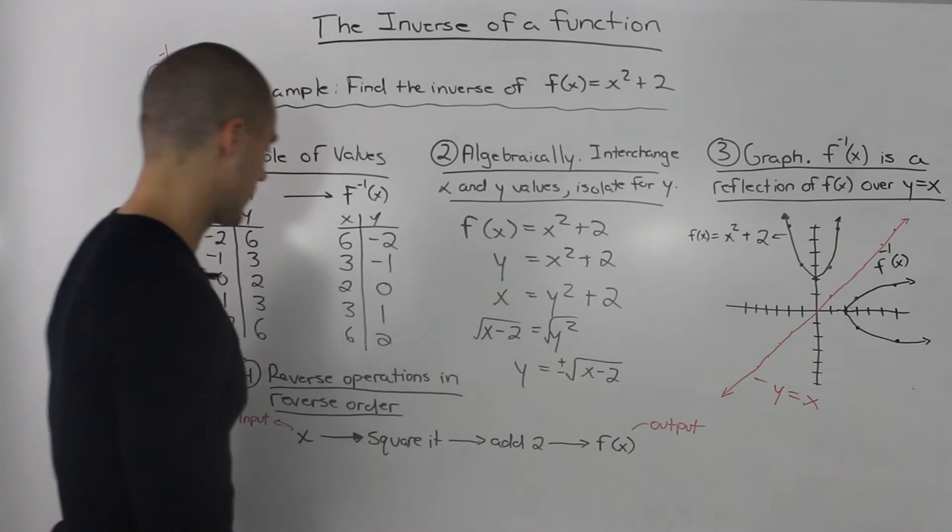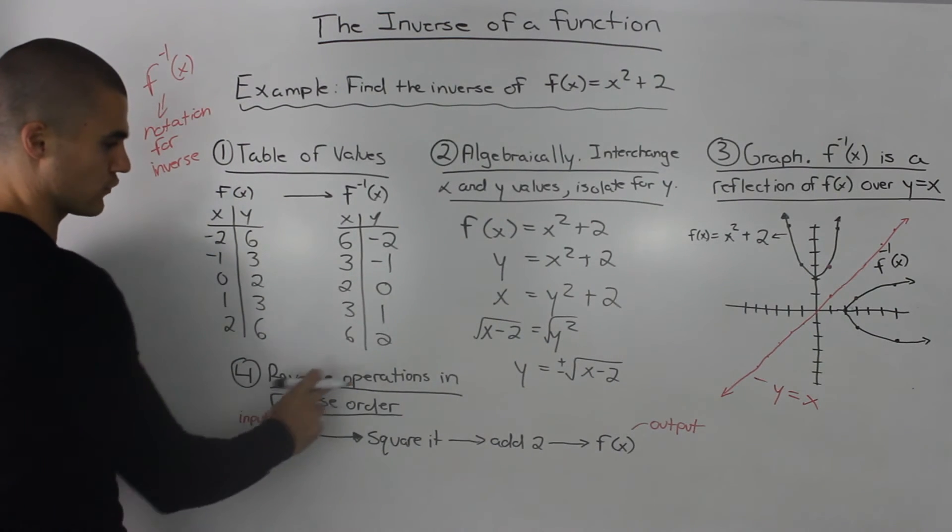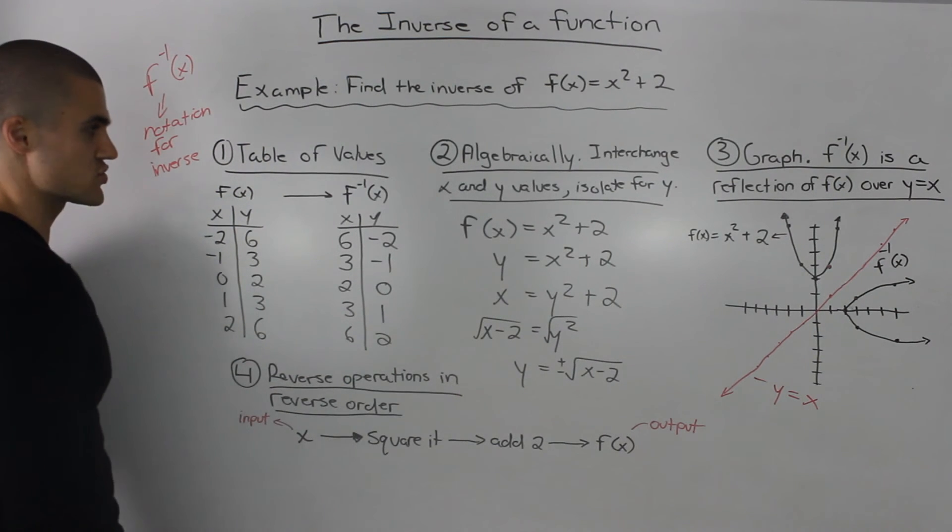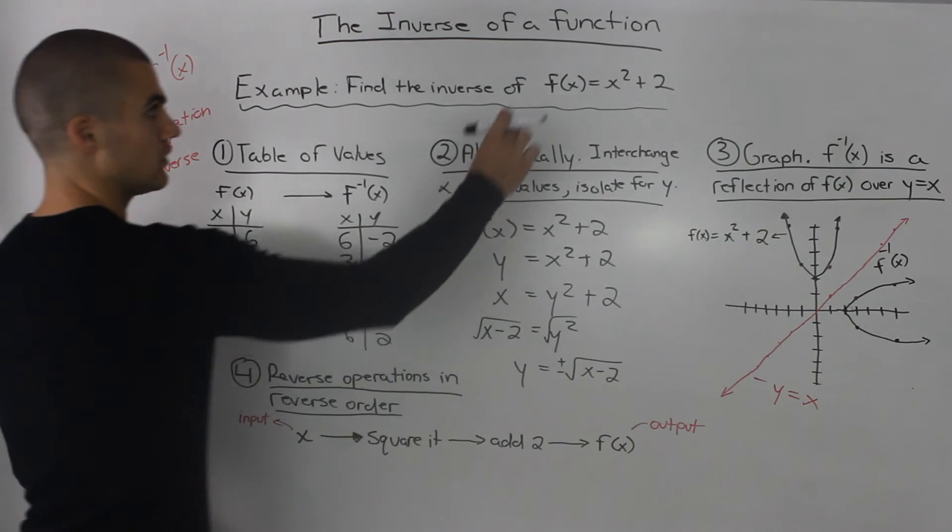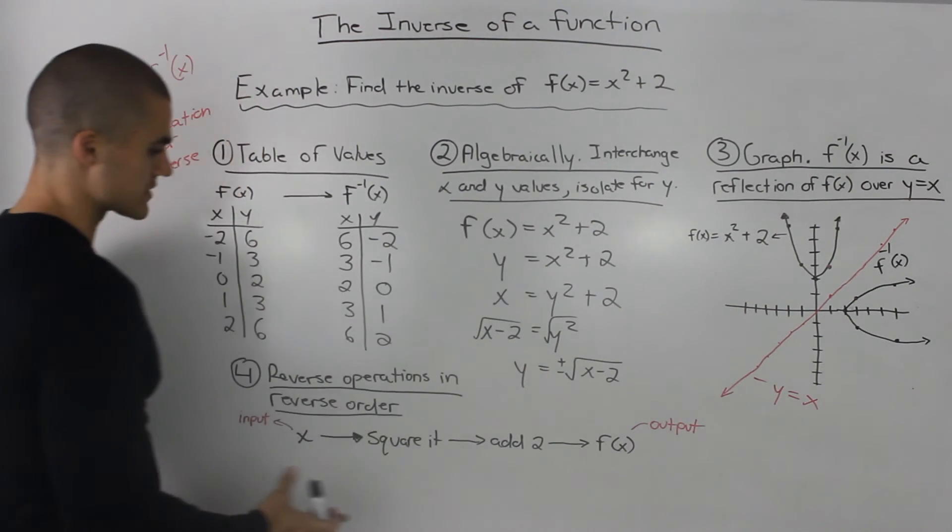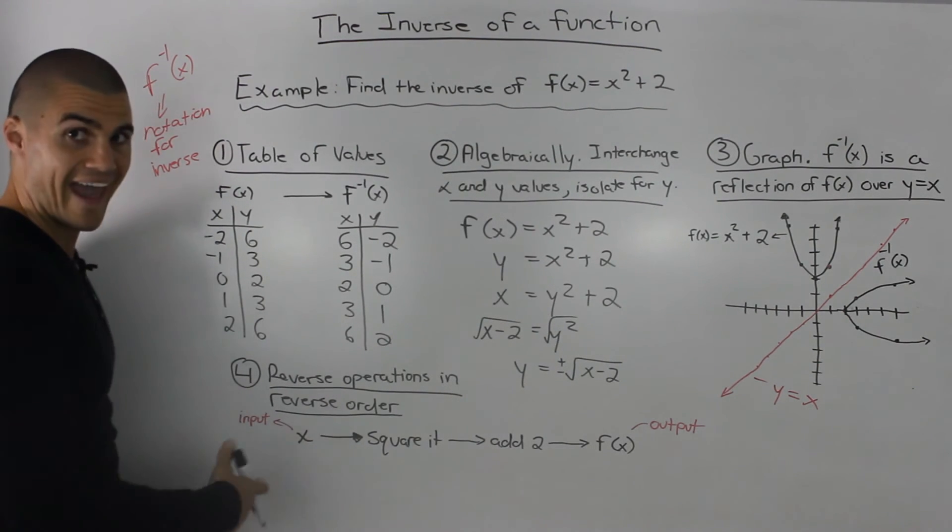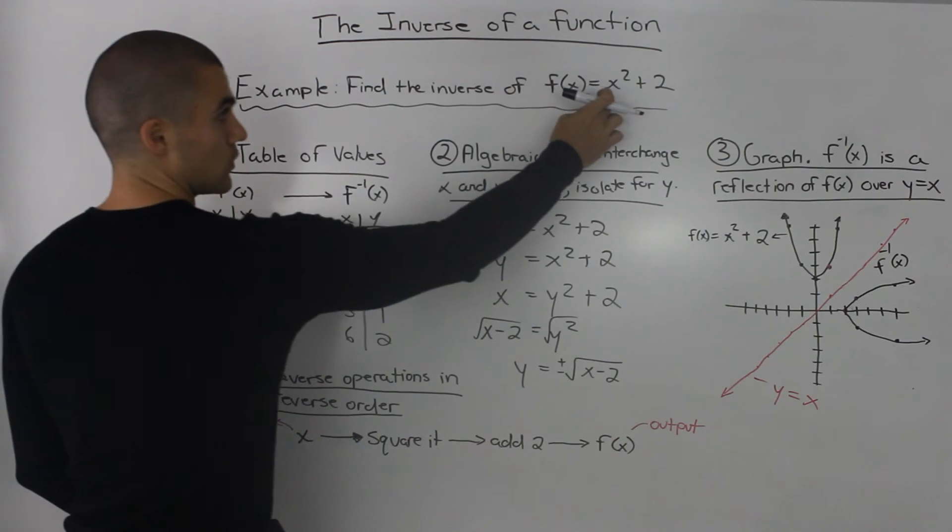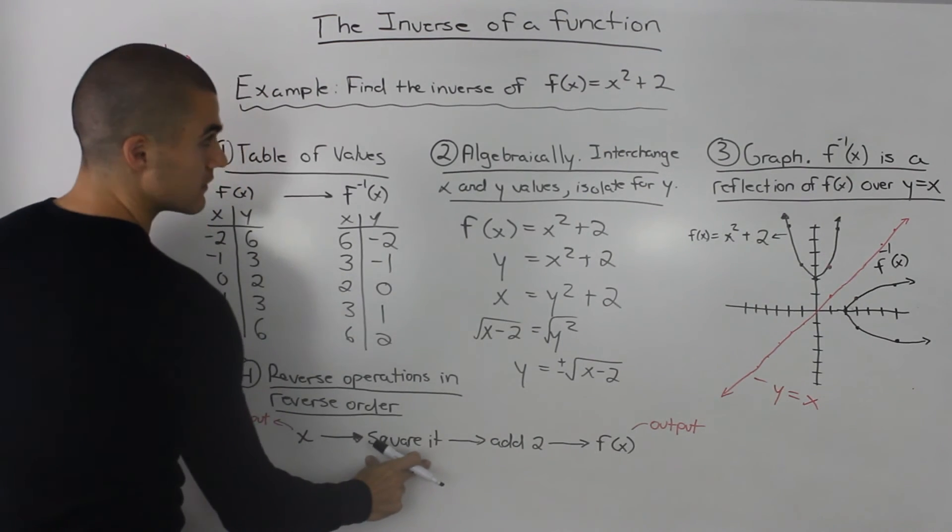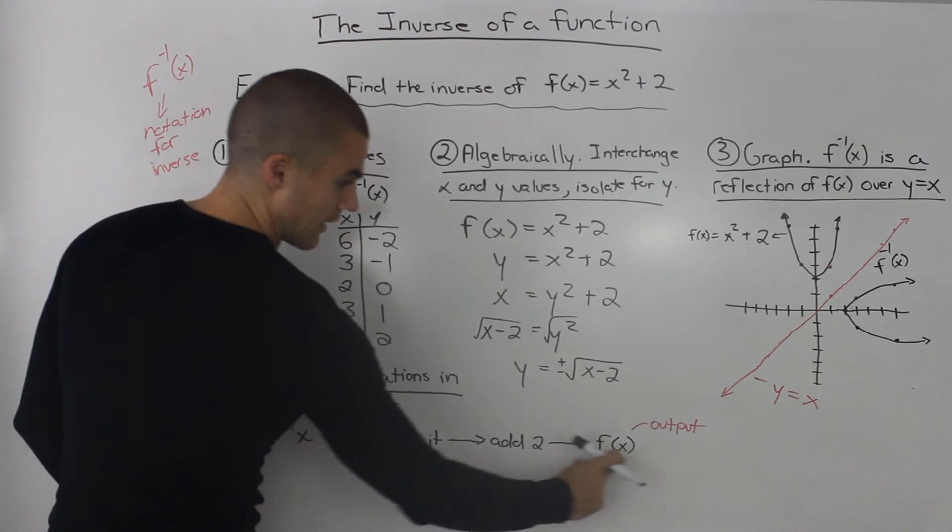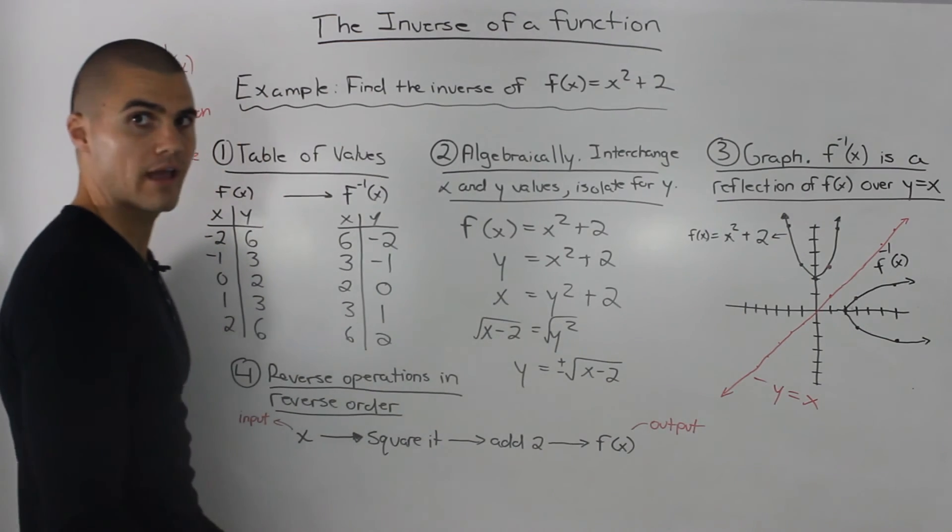And the fourth and final way to find an inverse is we reverse the operations in reverse order. So what do we mean by this? Well if we look at our original function f(x), what are we essentially doing? We're taking an input x, we square it, and then we add 2. And then we get our output f(x).